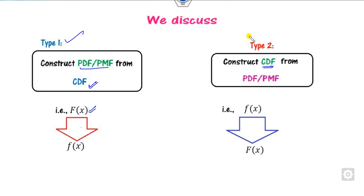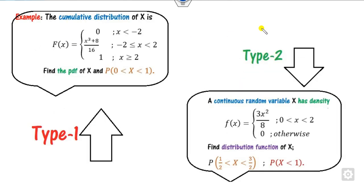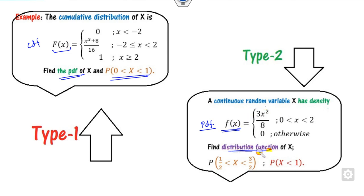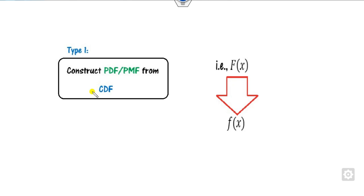I consider this as Type 1 and Type 2. In the first case, the CDF is given and you have to find the PDF and the corresponding probabilities. In the second case, the PDF is given and you have to find the CDF and the corresponding probabilities. We will describe two methods for solving each of these problems. Let's start with Type 1: when the CDF is given, find the PDF.